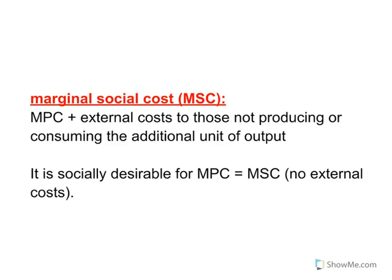The counter is marginal social cost. Marginal social cost is marginal private cost — the cost to firms of producing the next unit — plus external costs to those not producing or consuming the additional unit. It is socially desirable for MPC to equal MSC, so there are no external costs; the firm is the only one paying the cost to produce the product. A classic example is pollution: if a firm is producing output and causing pollution, that pollution is an external cost — it makes it hard for others to breathe, and can cause smog in major cities. We want that firm to internalize those costs and be the only one paying them, rather than imposing external costs on others.